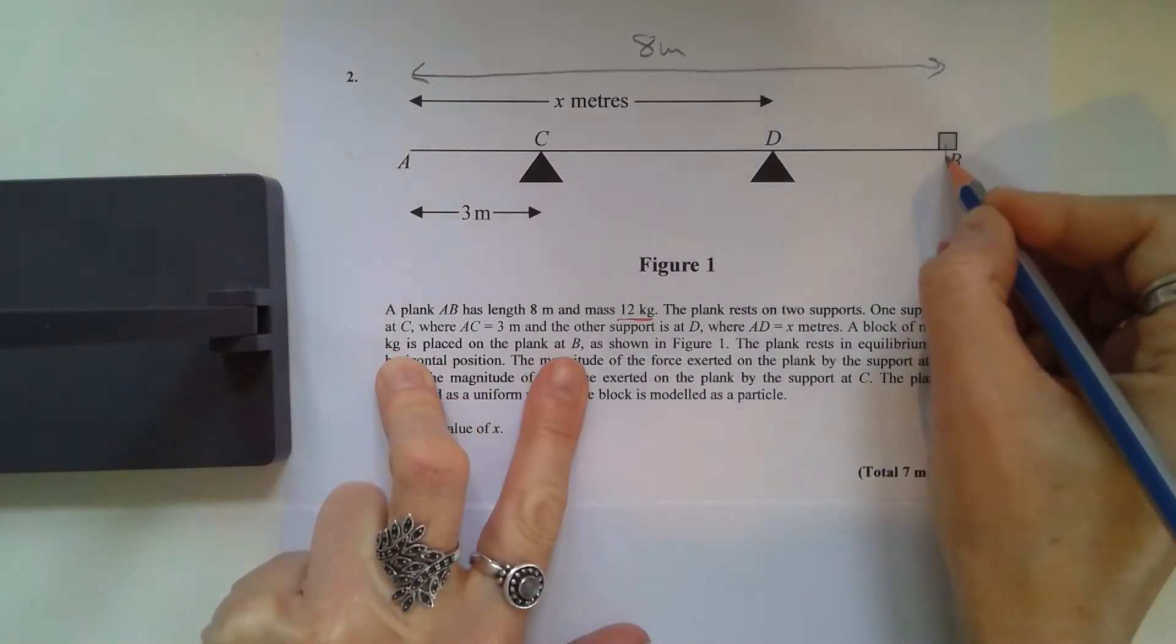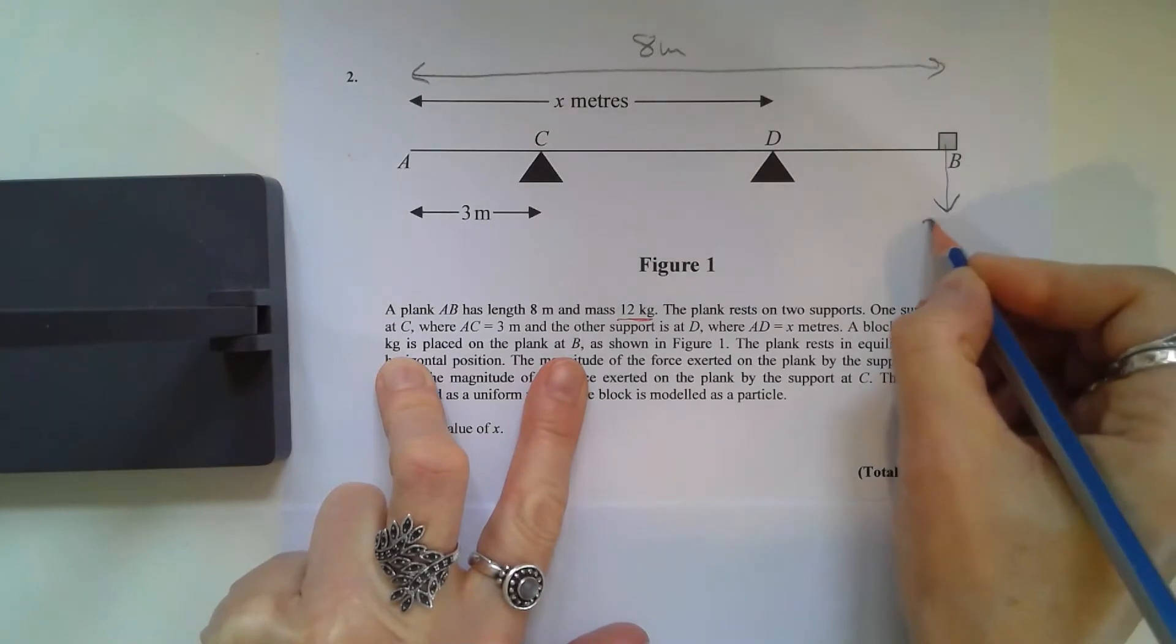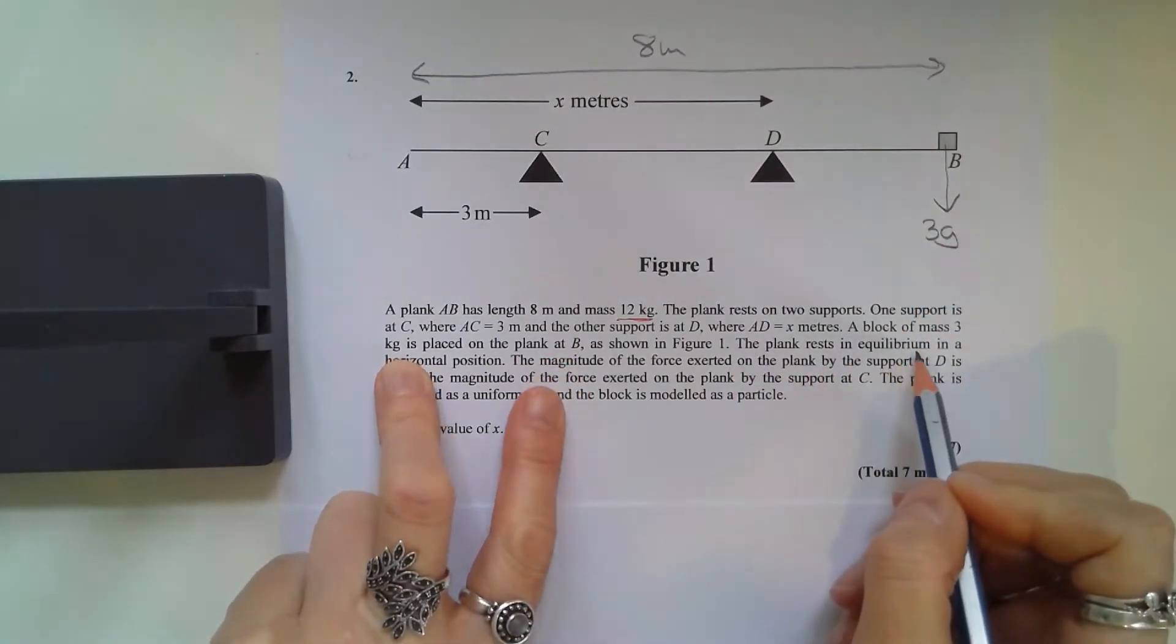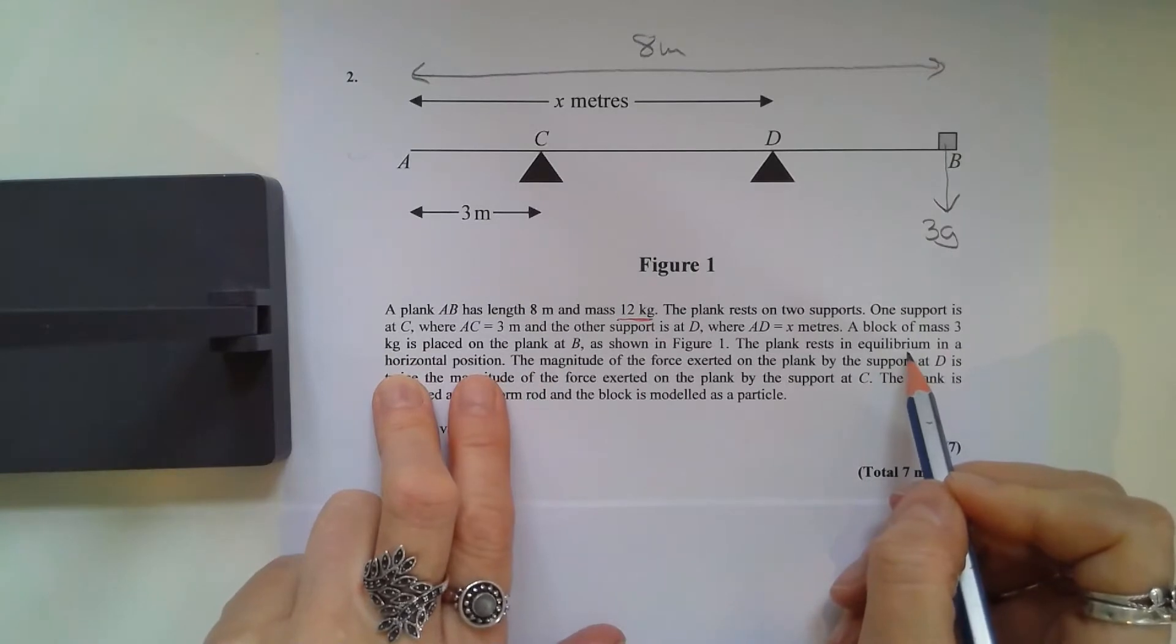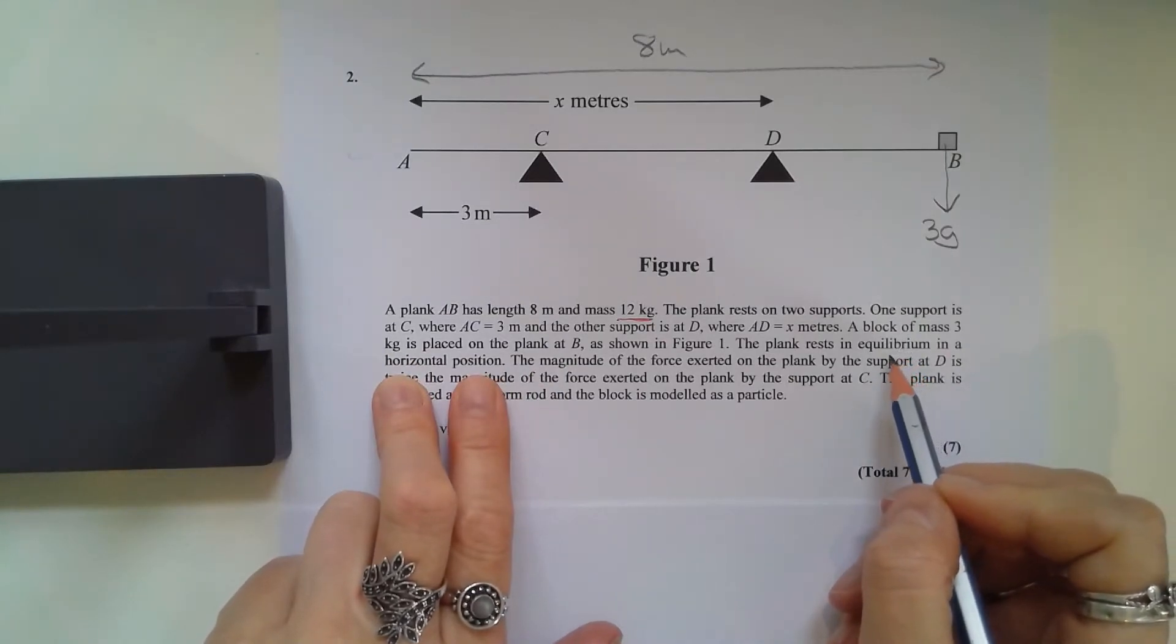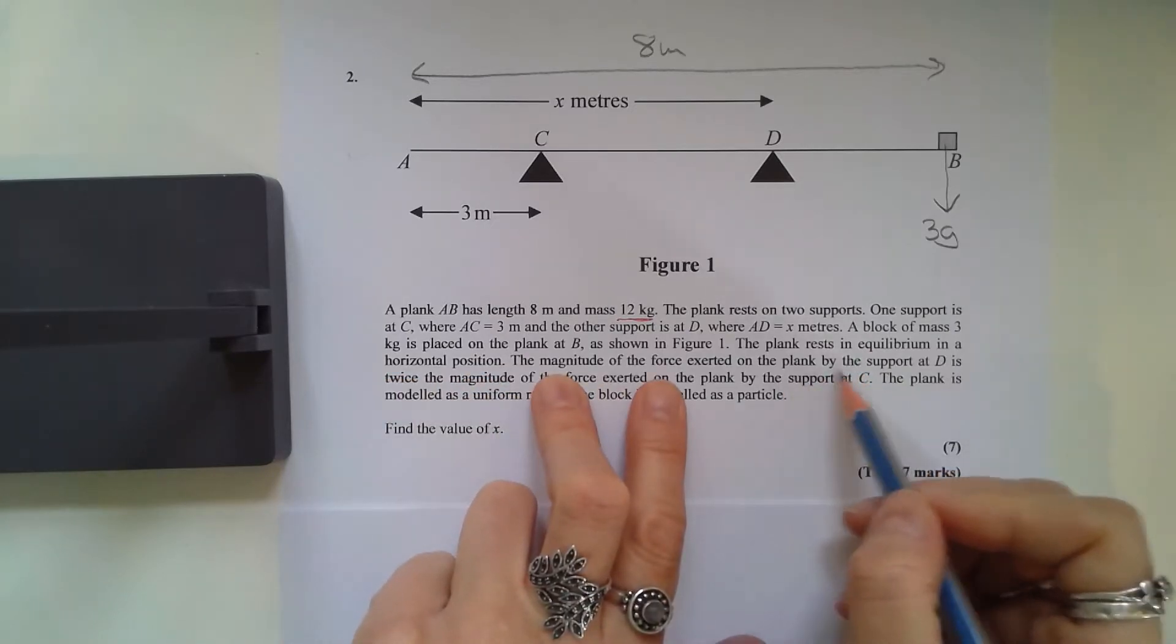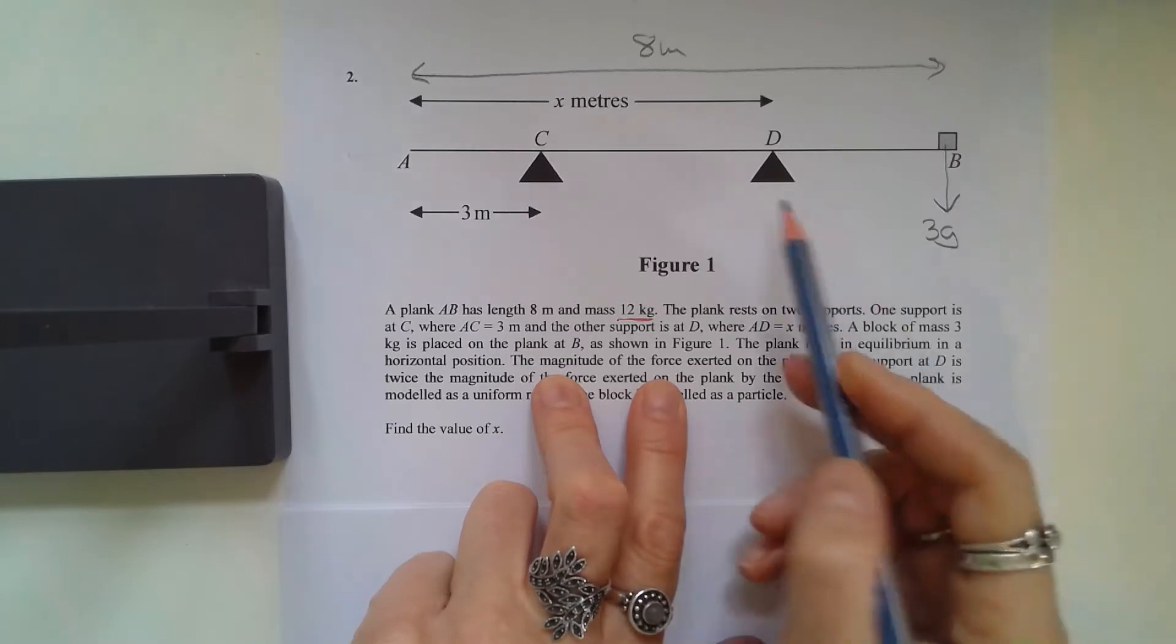A block of mass 3 kilograms is placed on the plank at B, so let's just mark its weight 3g. The plank rests in equilibrium in a horizontal position. That means all of the forces in one direction balance out with all of the forces in the opposite direction.